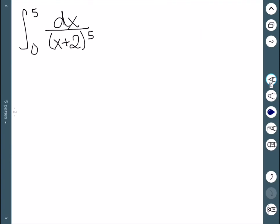Here we have dx over x plus 2 to the 5th. So we'll let u be equal to x plus 2. du would then be equal to dx.